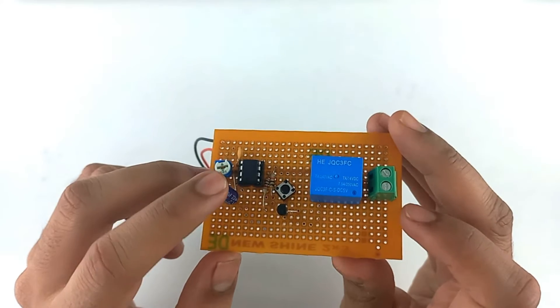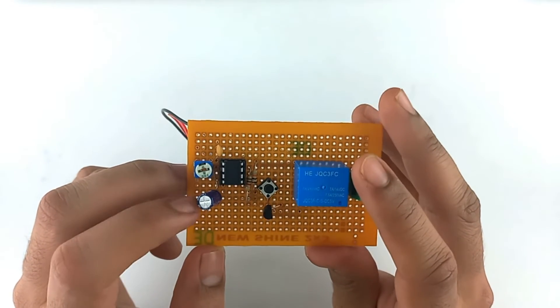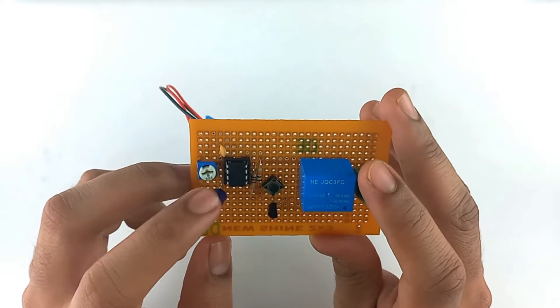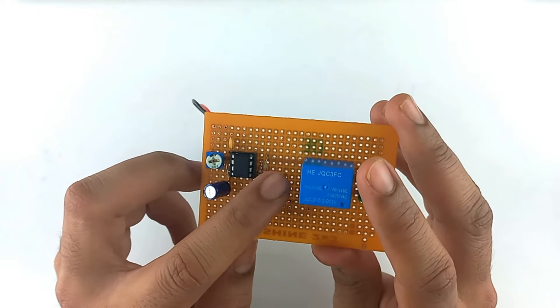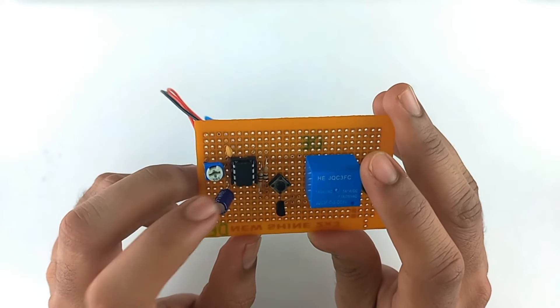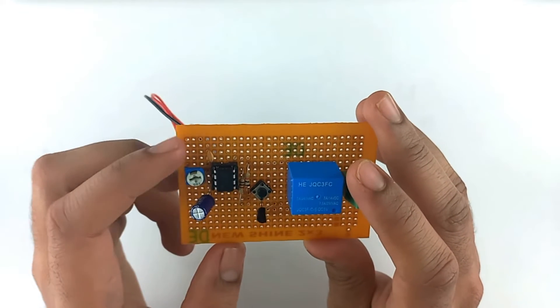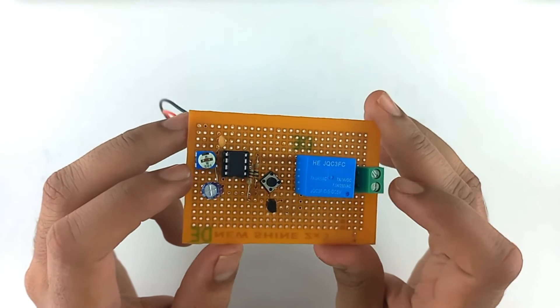This is an electrolytic capacitor whose positive terminal is connected to pin number 6 and 7, and negative terminal is connected to ground. This is a pushbutton which is connected between the negative terminal of capacitor and pin number 2. So this is all about the PCB.